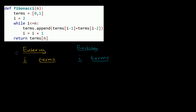Let's make sure we really understand what's happening in this iterative Fibonacci function. I'm going to step through it with a particular example. We're going to assume this function is called with the argument 5 — so we want the fifth term in the Fibonacci sequence, where we index starting at 0. When we go into this program, terms is defined as a list with just two elements: 0 and 1.